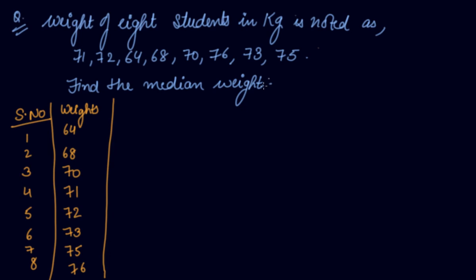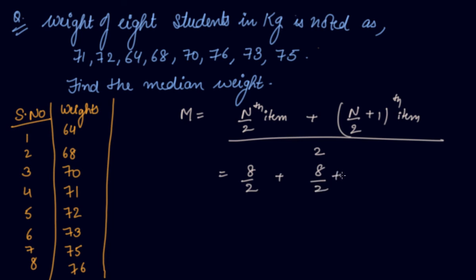When it's your even series, what you do, you have this formula that is n divided by 2th item plus n divided by 2 plus 1 item divided by 2. So your n is 8 divided by 2 plus 8 divided by 2 plus 1 divided by 2. So your 4th item plus your 5th item divided by 2.